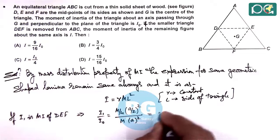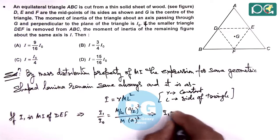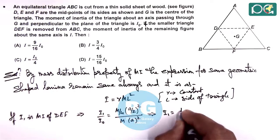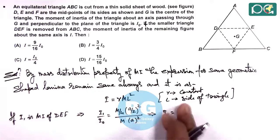So this is giving us a value I₁ is equal to I₀ by 16.